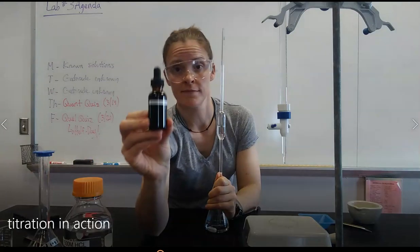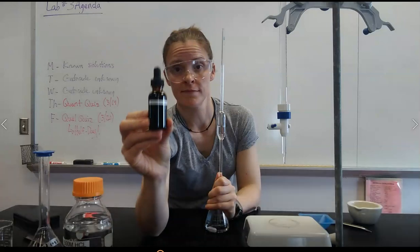Before I can do my titration I need to add an indicator. An indicator is going to turn colors as we reach the equivalence point — you want the end point and the equivalence point to match up. I'm working with a solution of hydrochloric acid and I'm going to use a solution of sodium hydroxide to titrate against it. So let's think about the strength of the acid and base and maybe we can figure out what the identity of that indicator is.